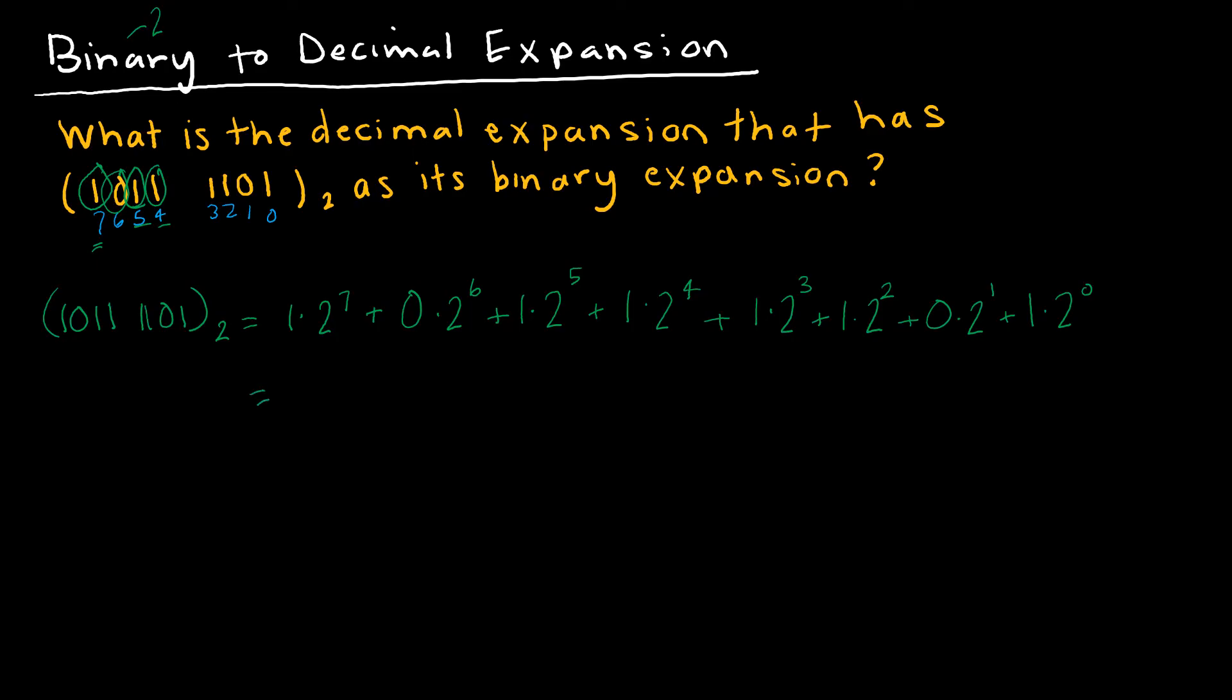From here, I'm going to just do some simplification. So this is 1 times 128. I'm not even going to work with the 0 because who cares. So this is 1 times 32, plus 1 times 16, plus 1 times 8, plus 1 times 4, plus 1 times 1. And if I add up 128, 32, 16, 8, 4, and 1, I get 189.